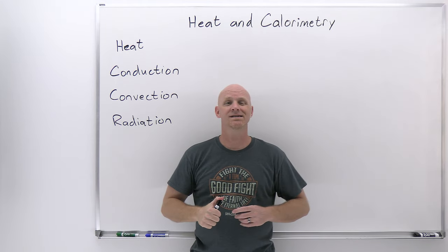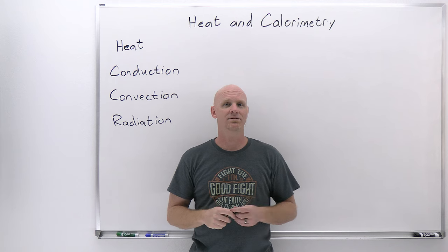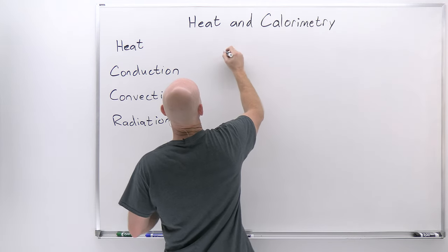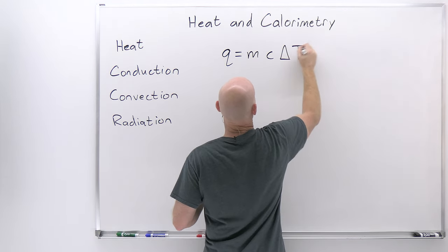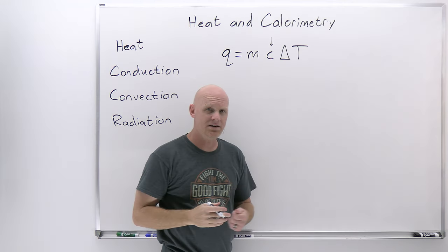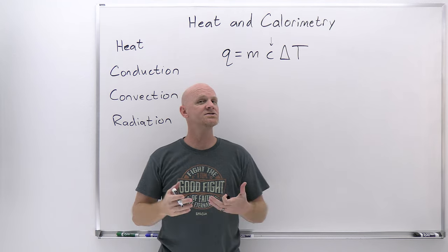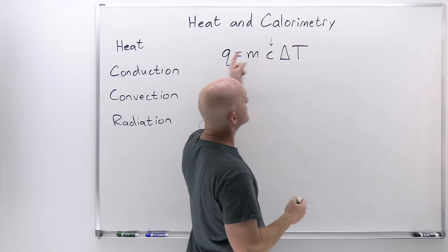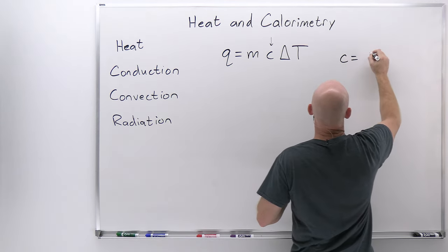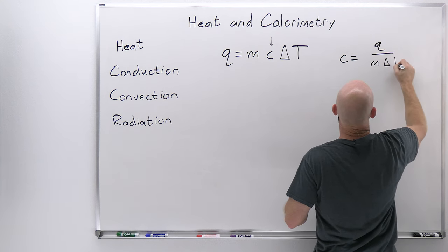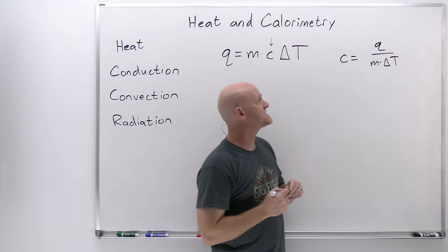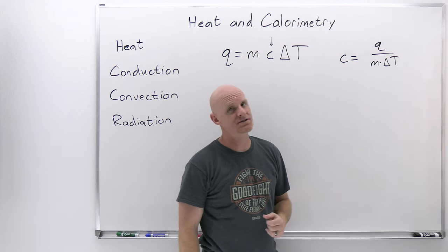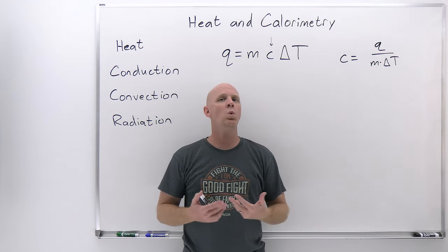Now we're going to get into the nuts and bolts of this lesson: calculations involved with calorimetry. We start with specific heats. The classic equation here is Q = mcΔT, where C is the specific heat — a characteristic of a substance. Specifically, it is the amount of heat required to raise one gram of a substance one degree Celsius. If you rearrange and solve for C, you get C = Q / (m × ΔT) — the amount of heat per one gram per one degree Celsius.